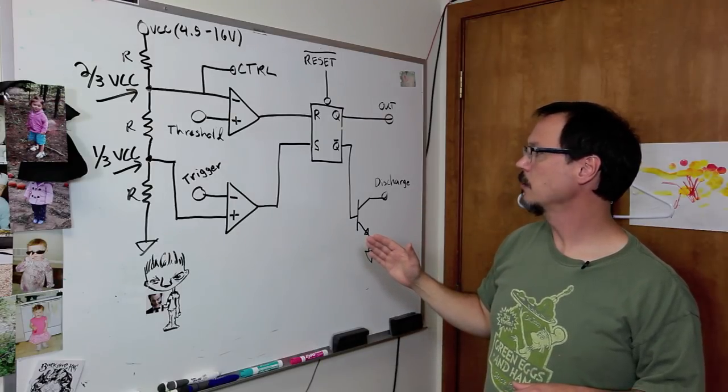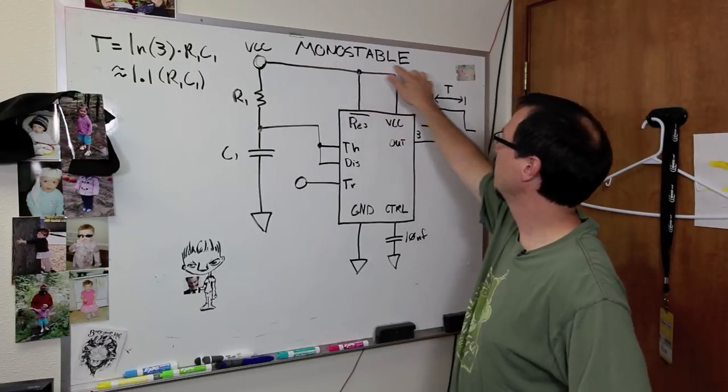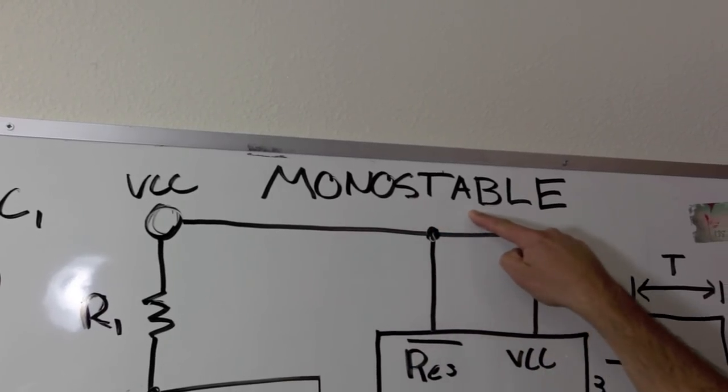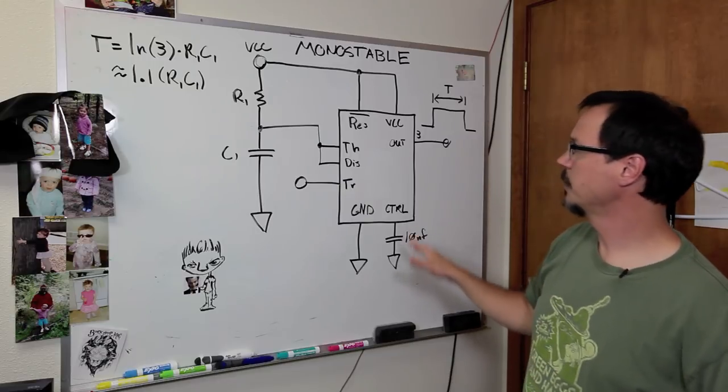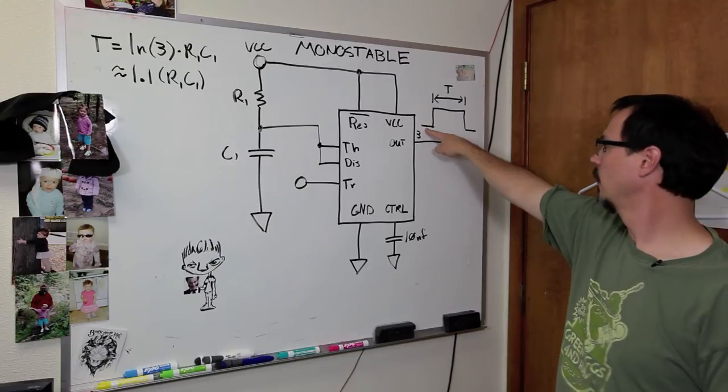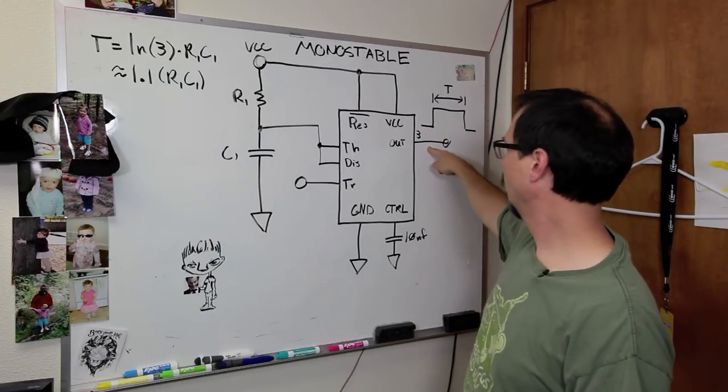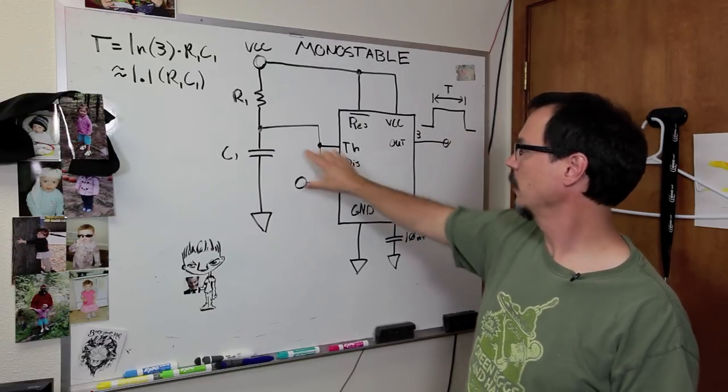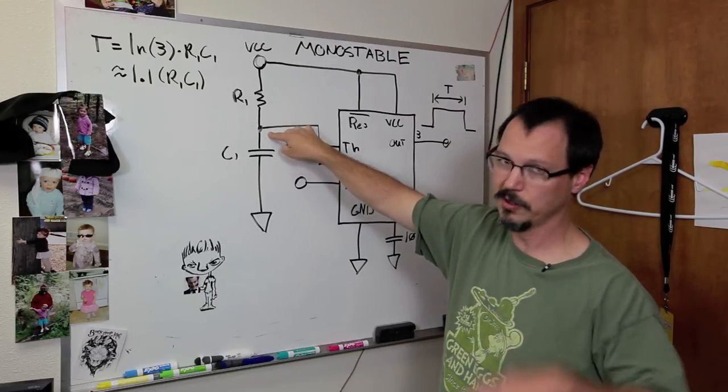So now, let's get into the different configurations. This is a monostable configuration. Monostable. Now, the way this circuit works is that normally it sits in the low spot, right? The output will normally be at zero volts. So, in the zero volt state, this discharge pin is active, right? So, this guy has been discharged, and this line is pulled low. It's pulled to zero volts, okay?